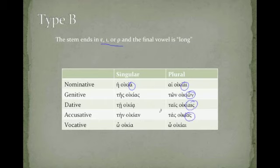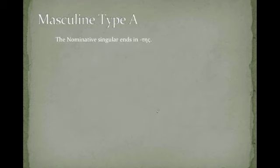So, with that in mind, let's take a look at the masculines. Remember, I said there were two types. The first type is in which the nominative singular ends in -ēs, or eta-sigma.